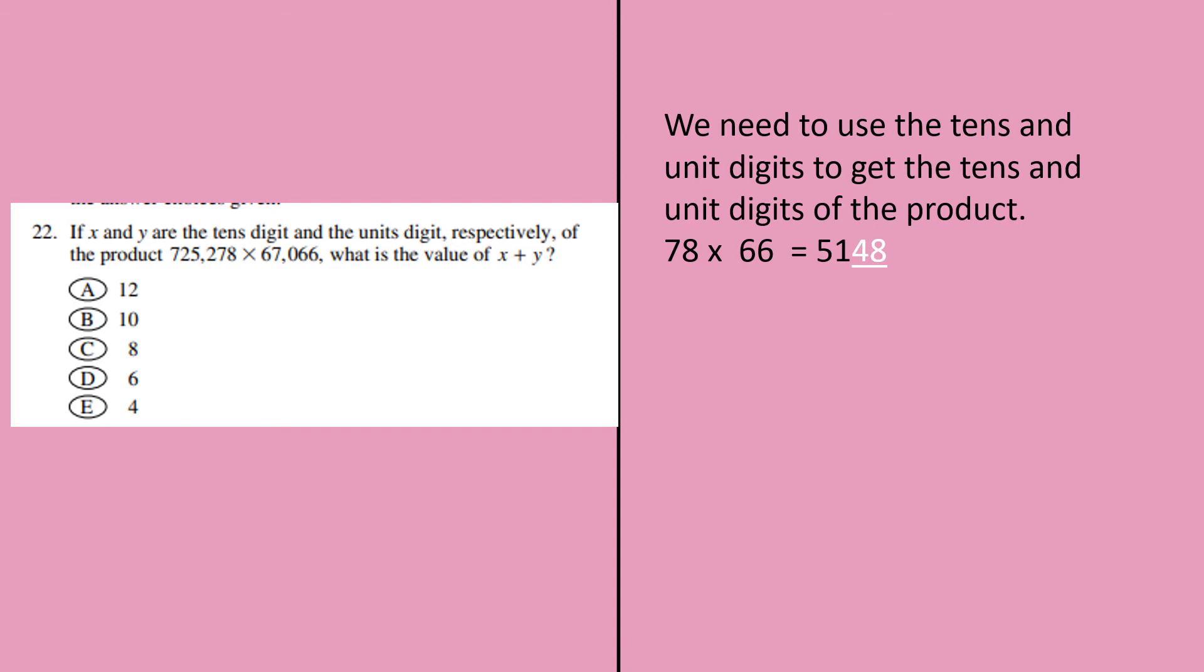4 is my X, 8 is my Y. So X is 4, Y is 8. I need X plus Y. So when I add X and Y, 4 plus 8 gives me 12, and my option is A.